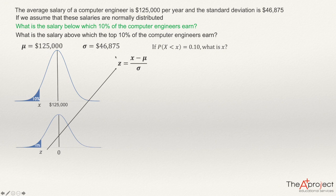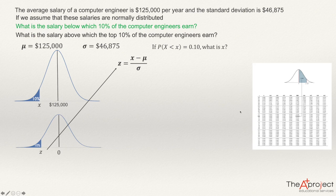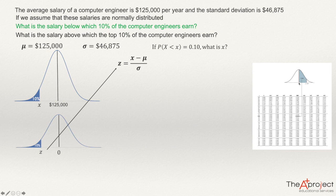Let's find this z. One place to find it is the normal distribution table, where we look up areas. We need a value z that has 10% area to its left. However, the table gives us areas between z and 0 — the area between the number and the center of the graph. Since we know 10% is to the left, there must be 40% between z and 0. So I'm going to find a value z that has 40% between it and 0.